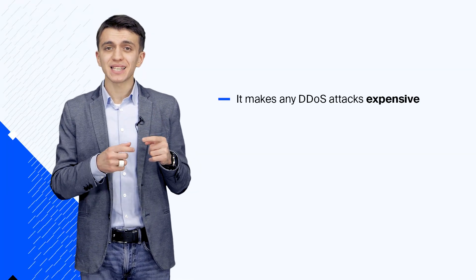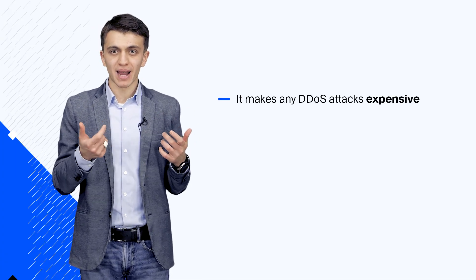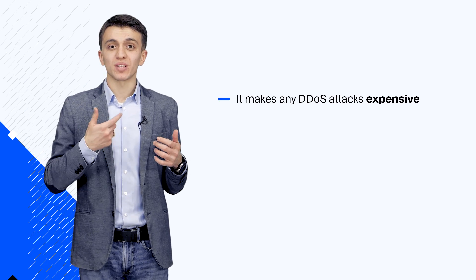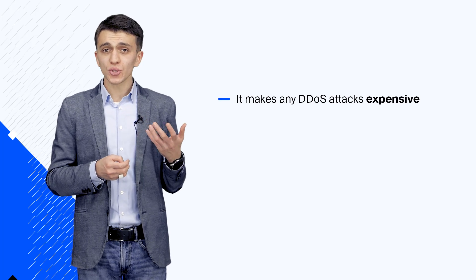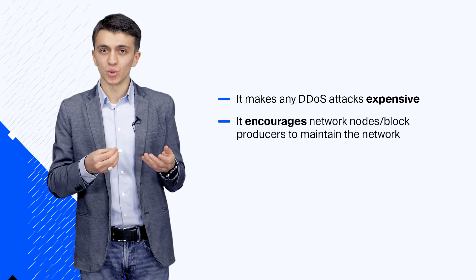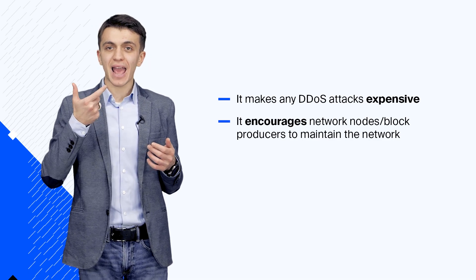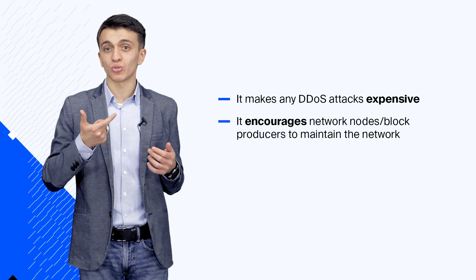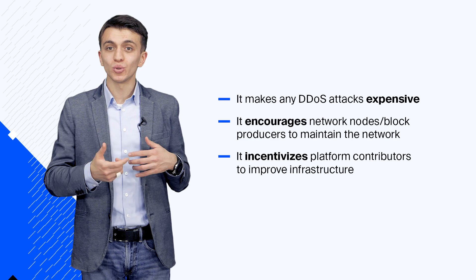To summarize, the native WAVES token is important for platform functionality. First, it makes DDoS attacks expensive because you have to spend time or money buying WAVES to do transactions — you cannot simply DDoS without paying for it. It also encourages network nodes and block producers to maintain the network, rewarding them with every block they create, and incentivizes platform contributors to improve infrastructure.